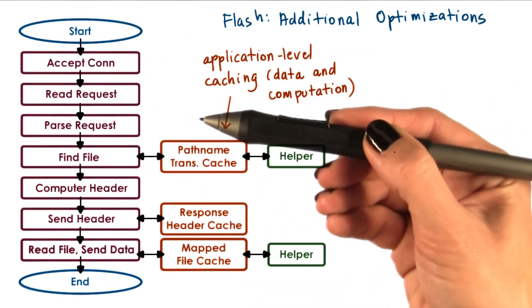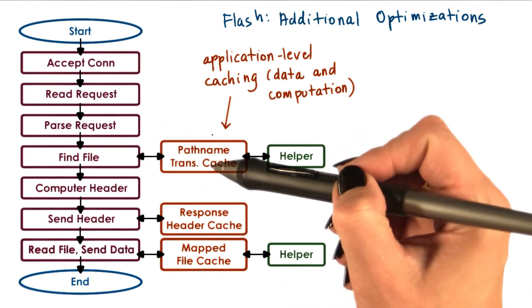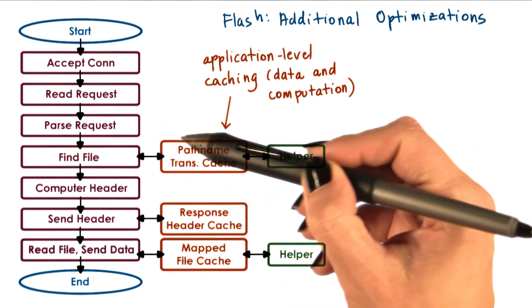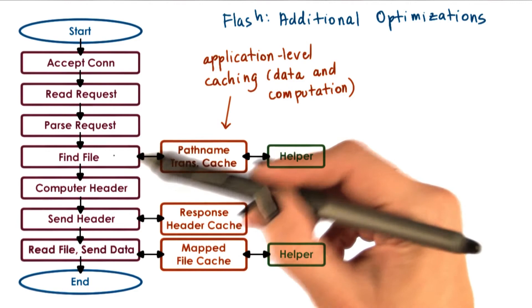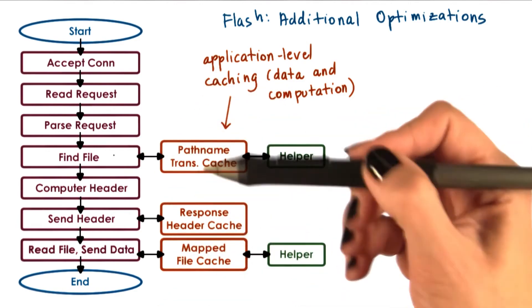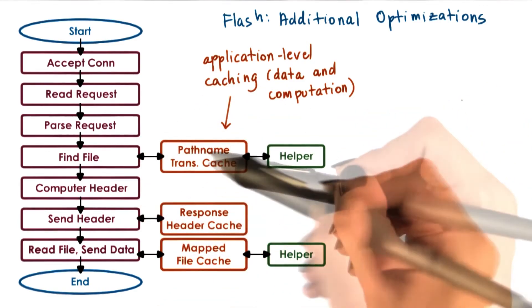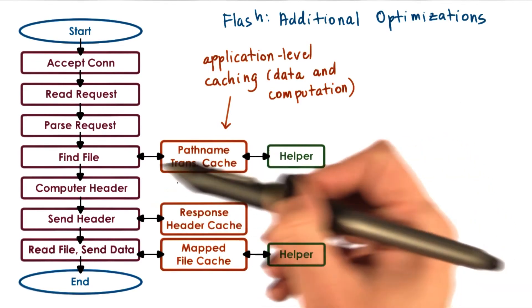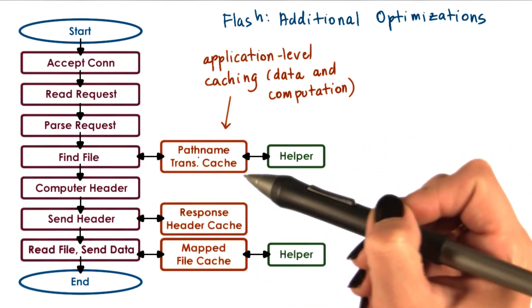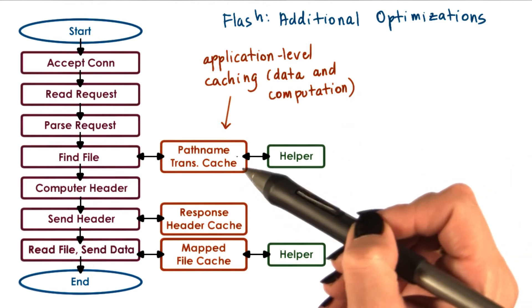These files need to be repeatedly looked up. We need to find the file, traverse the directory, and look up directory data structures. That processing computes results like the location or pathname for the file, and we cache that.